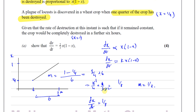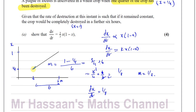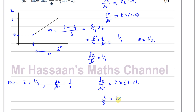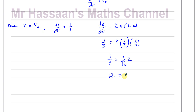So we can say at the point when x equals a quarter, the gradient at that point — as it says, if the rate of destruction is the same at this instant and remains constant, the total crop will be destroyed. So when x equals a quarter, dx/dt equals 1/8. We know dx/dt equals k times x(1 minus x), so replacing dx/dt with 1/8 and x with 1/4: 1/8 equals k times (1/4)(3/4), giving 1/8 equals (3/16)k. Multiplying both sides by 16: 2 equals 3k, therefore k equals 2/3. That's exactly what we had to show.